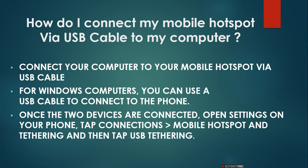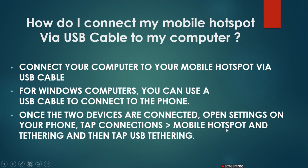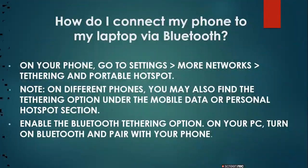Third is how to connect your mobile hotspot via USB cable to your computer. Connect your computer to your mobile hotspot via USB cable. For Windows computers, you can use a USB cable to connect to the phone. Once the two devices are connected, open Settings on your phone, tap Connections, then Mobile Hotspot and Tethering, and then tap USB Tethering. Both will connect to each other and work like a wireless internet.